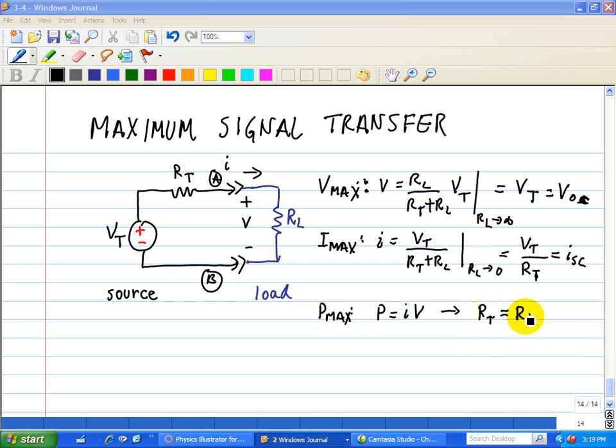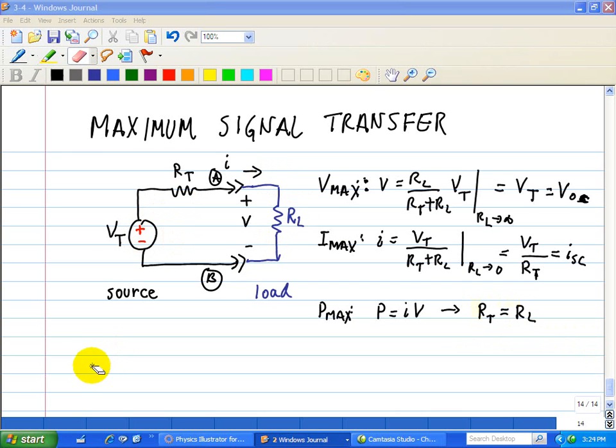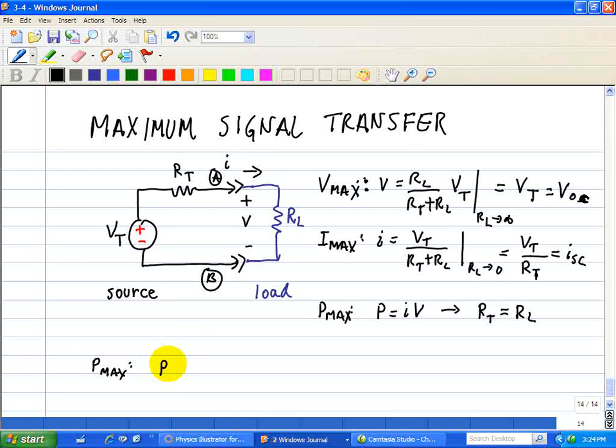When RT is equal to RL, we say that the load and the source are matched. So to get P max, we use these two expressions, V and I, given here and here. When we do that, P equals V times I.